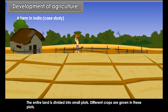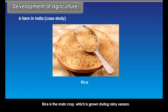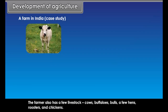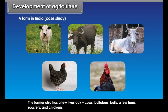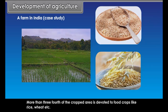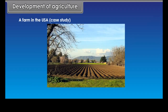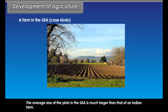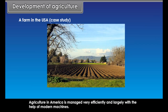A farm in India — case study: The owner of the farm generally resides in the main village and the entire land is divided into small plots where different crops are grown. Rice is the main crop, grown during the rainy season. The farmer also has a few livestock — cows, buffaloes, bulls, a few hens, roosters and chickens. More than three-fourths of the cropped area is devoted to food crops like rice and wheat. With the exception of a few rich farmers, the majority belong to the category of intensive subsistence farming.